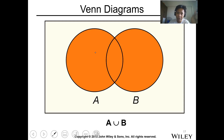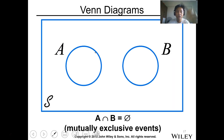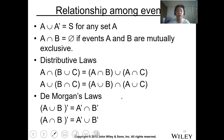This is the intersection — event A and B, where the intersection is the orange area. If you have a mutually exclusive event, as a review, it means there's no intersection, or the intersection of events A and B is the null set. There are no elements present in the intersection.